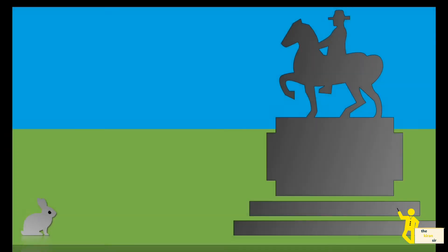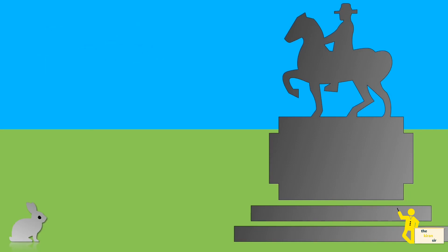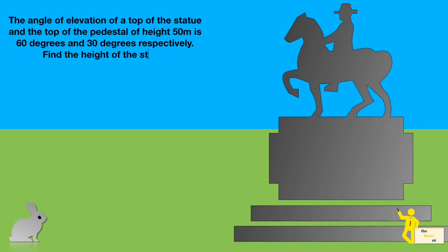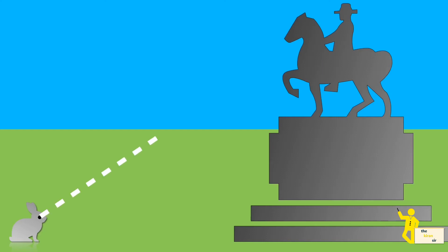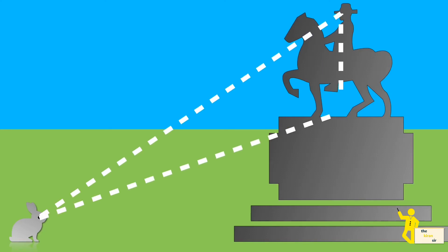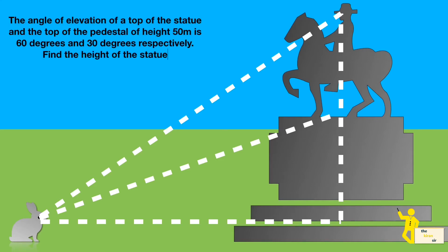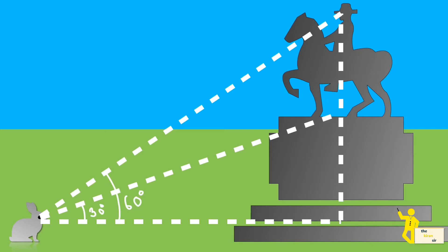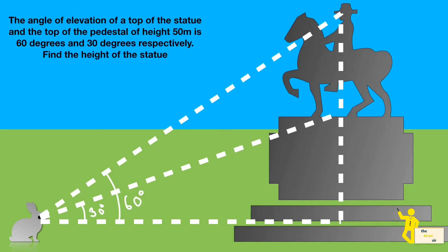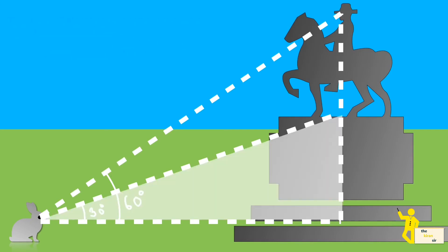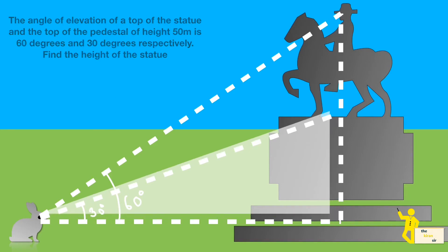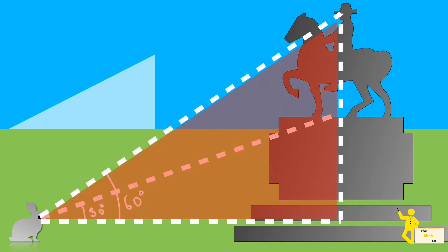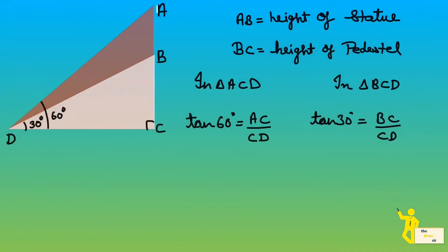The third type of question again involves two triangles, but one triangle is over the other. For example, the angle of elevation of the top of a statue and the top of its pedestal are given — one angle is 30 degrees and the other is 60 degrees. There are two right angle triangles: the white one with 30 degrees and the larger red one with 60 degrees.